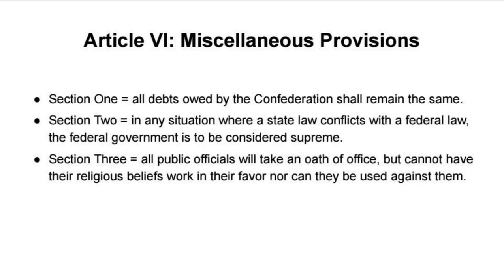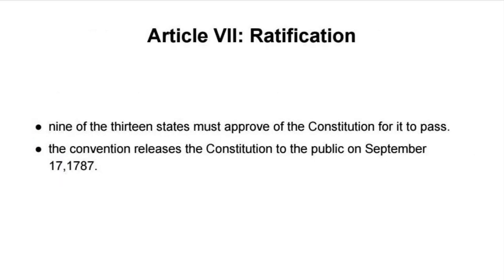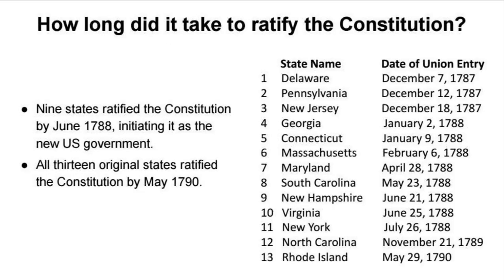There are miscellaneous provisions as well. Article 6 Section 1 states that all debts owed by the Confederation remain the same — they would not renege on debts. Section 2 is the Supremacy Clause: any situation where a state law conflicts with a federal law, the federal government is considered supreme. Section 3 states that all public officials will take an oath of office but religious beliefs cannot be used for or against them. Article 7 outlined ratification: nine of the thirteen states must approve the Constitution for it to pass. The Convention released the Constitution on September 17th, 1787. Nine states had ratified it by June 1788, and all thirteen original states had ratified it by May 1790, with New Hampshire's vote on June 21st, 1788 reaching the threshold.